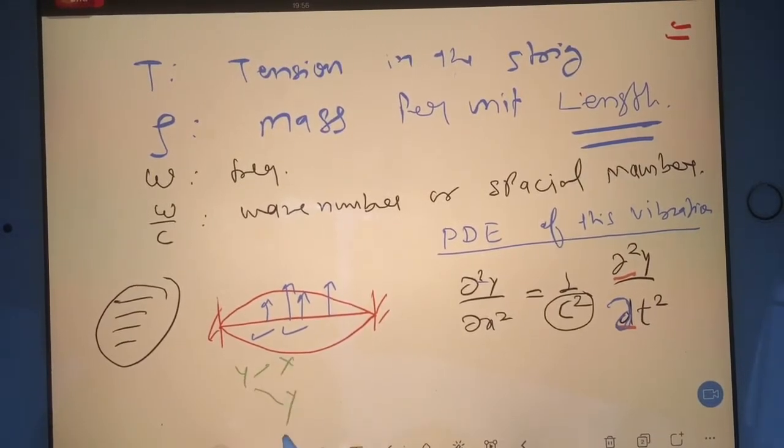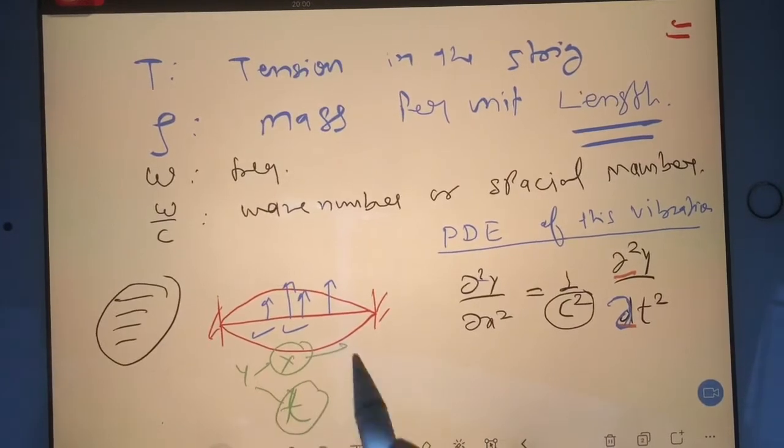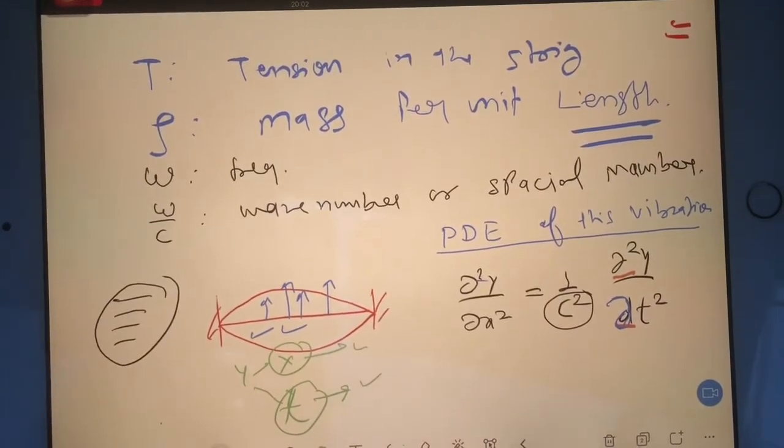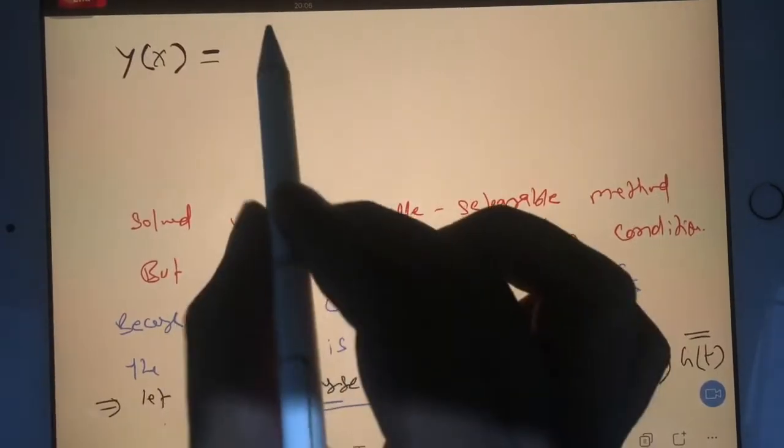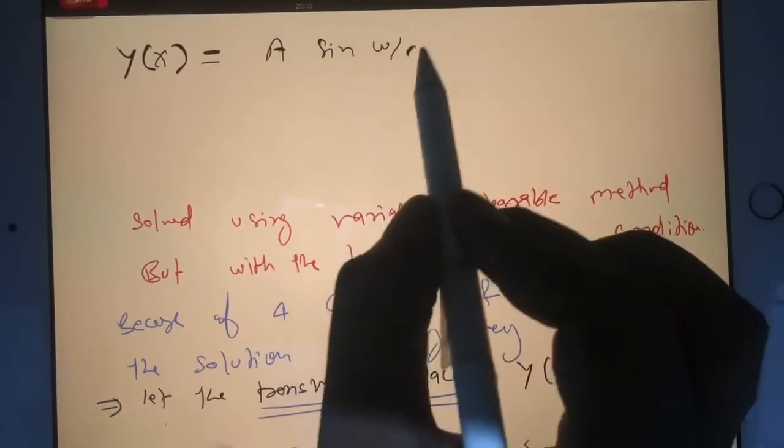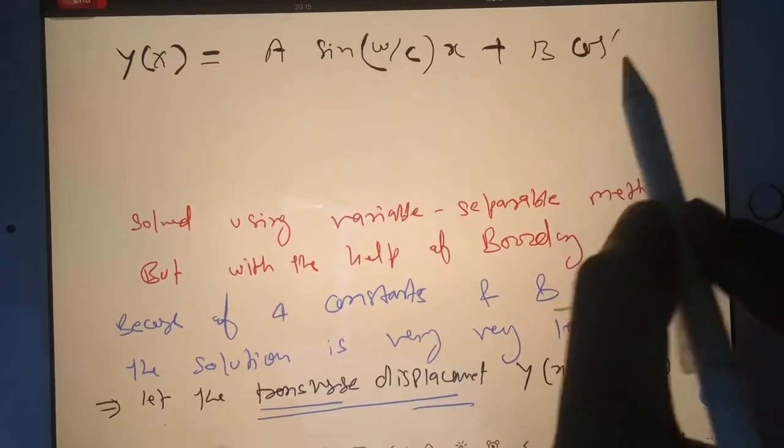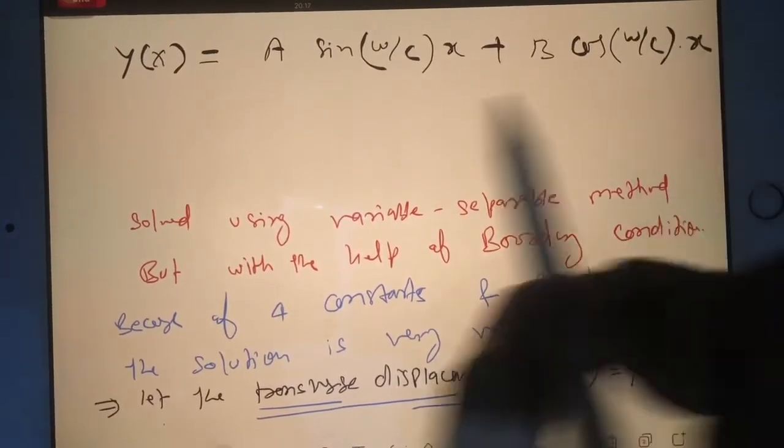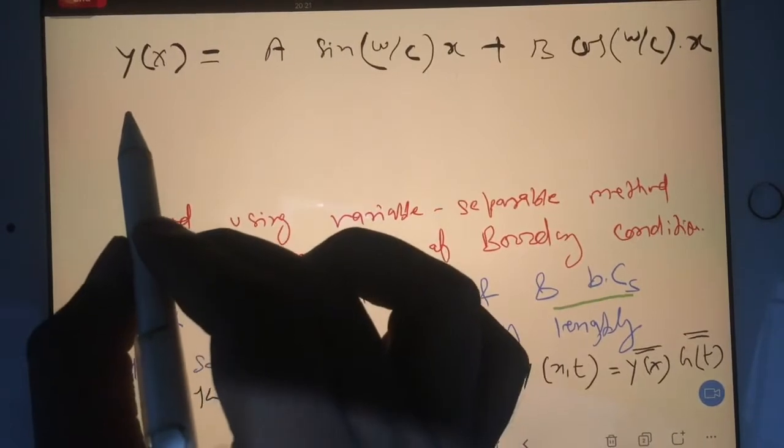In the beginning I told you that y is the function of x and time. So x and time both contain their own equations. Your y(x) contains A sin(ω/c)x plus B cos(ω/c)x. It's very lengthy, that's why we're not going to do the proof.